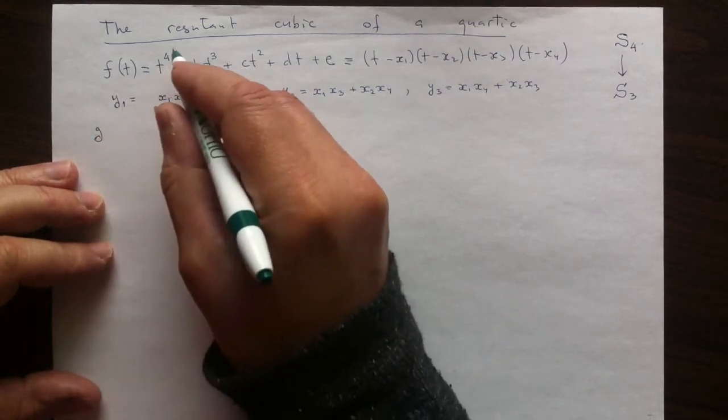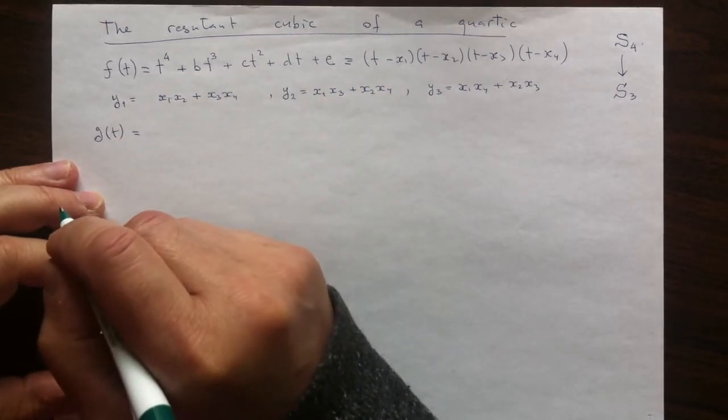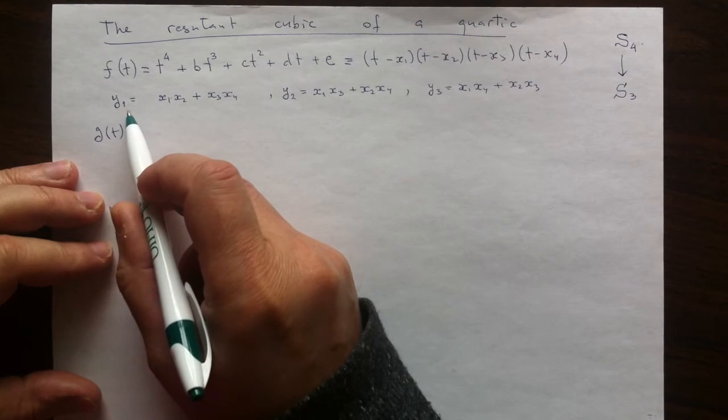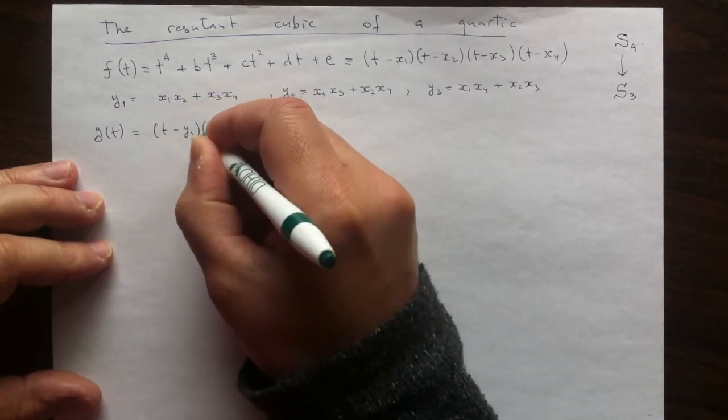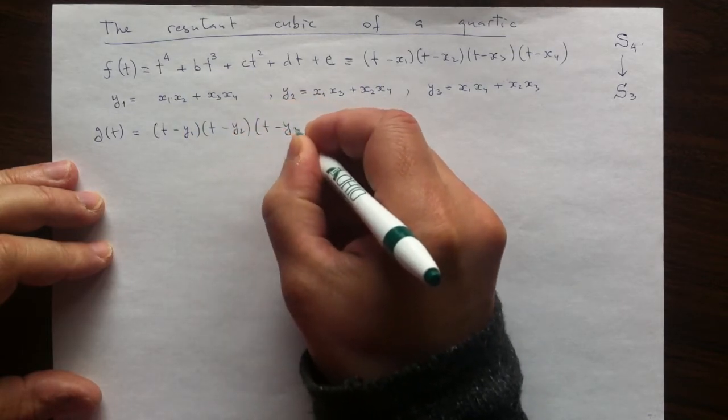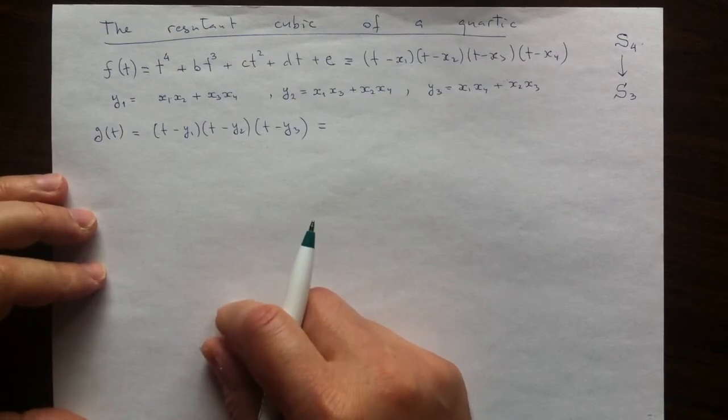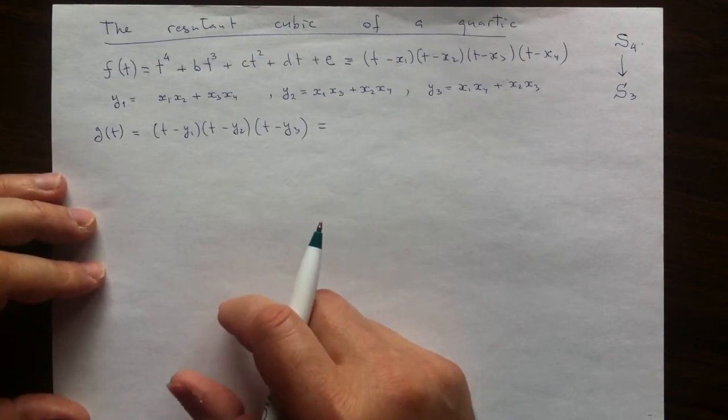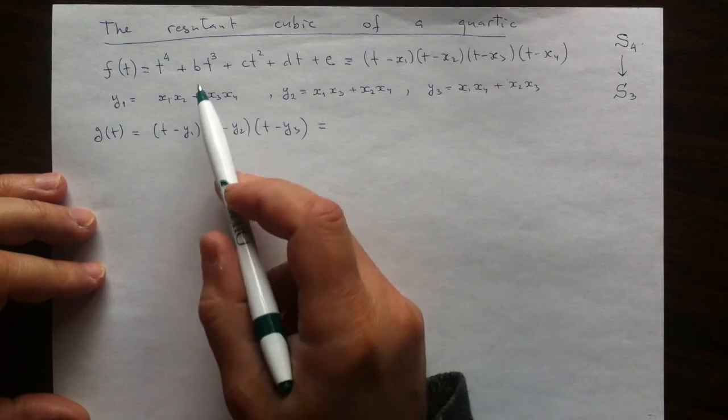My cubic, my resolvent cubic, this g of t will be such that it will have the roots, these y's. That's the meaning of the construction. That's the core of the construction.